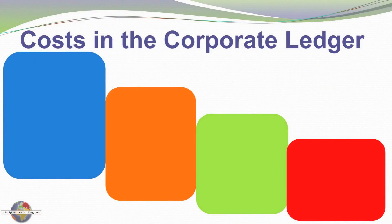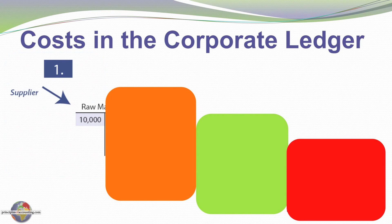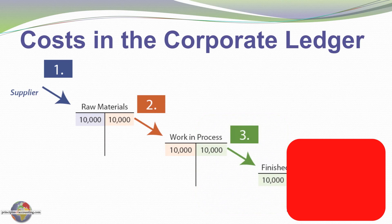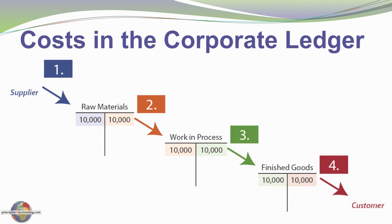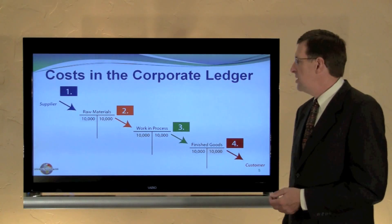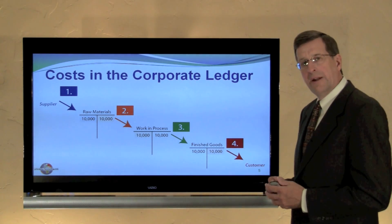In the ledger, using T-accounts: when we buy goods from the supplier, we debit raw materials inventory and credit accounts payable or cash. When we transfer the cost from raw materials, we credit raw materials and debit work in process. When we finish the process, we credit work in process and debit finished goods. And when we sell the goods to a customer, we credit finished goods and debit cost of goods sold — showing the flow of that $10,000 through the various inventory categories.